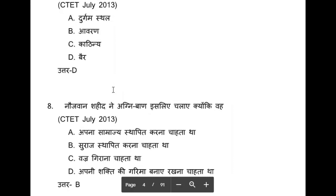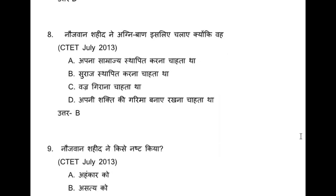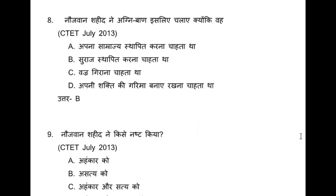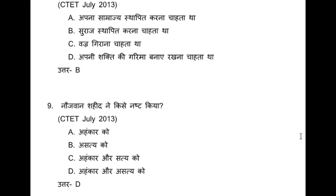Question 8: Naujawaan shaheed ne agni baan isliye chalaya kyunki — options: apna samrajye isthapit karna chahta tha / suraj isthapit karna chahta tha / vajr girana chahta tha / ya apni shakti aur garima banai rakhna chahta tha. The answer is he wanted to isthapit karna — suraj isthapit karna chahta tha — meaning he wanted to establish good rule. Question 9: Naujawaan shaheed ne kisai nust kiya — ahankar ko / satya ko / ahankar aur satya ko / ahankar aur asatya ko? From the options and re-reading the paragraph, it is clear the answer is ahankar aur asatya ko — the naujawaan shaheed nust kiya yahaan.